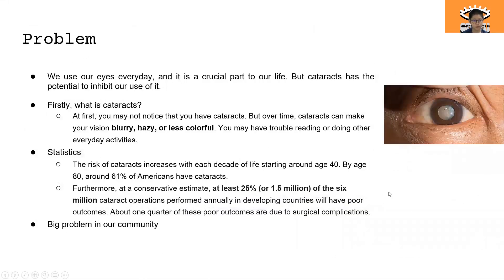So I'm going to introduce you to the problem, which is cataracts. We use our eyes every day. It is a very important part of our life, but cataracts has the potential to inhibit our use of it. You may be asking, what is cataracts? Cataracts can make your pupil look blurry, hazy or less colorful. And after a few years, maybe you will have trouble reading or doing other everyday activities. Some statistics show that the risk of cataracts increases with each decade of life starting around age 40.